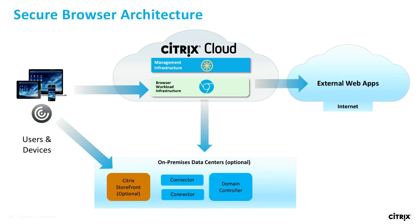Secure browser: what really happens behind the scenes is we have an isolated browser that runs in Citrix Cloud. We manage it, we instantiate it, and it offers three important functionalities: isolation, containment, and privacy. Isolation means whatever the end user does is happening in a browser outside your corporate network, within Citrix Cloud. If inadvertently a user ends up in a place where they should not, it's all contained within the secure browser environment with zero impact to your corporate network. What I mean by privacy is that at the end of the session, the entire context is deleted and completely reset — every time somebody logs in, you are guaranteed to start in a known clean state.